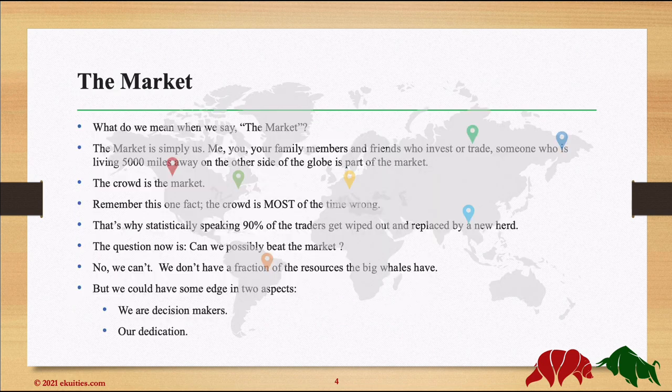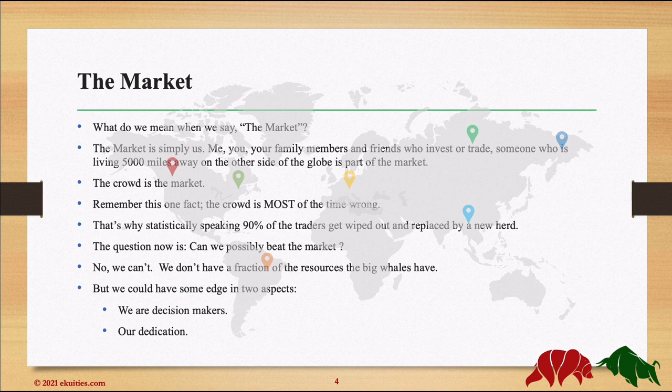So what do we mean when we say the market? The market is simply us — me, you, your family members and friends who invest or trade. Someone who is living 5,000 miles away on the other side of the globe is part of the market. The market also includes the big whales, the market makers. This is called market participants, as we will see later in the video. So long story short, the crowd is the market.